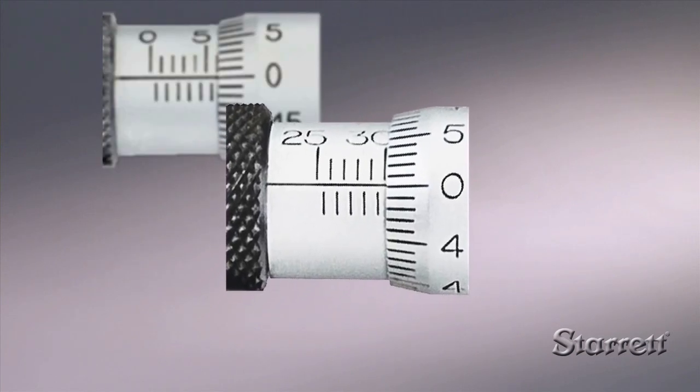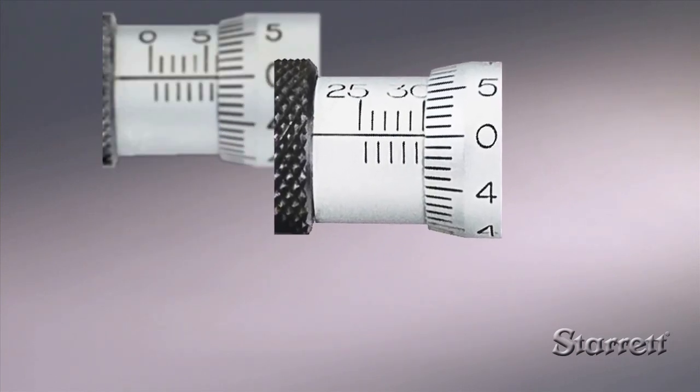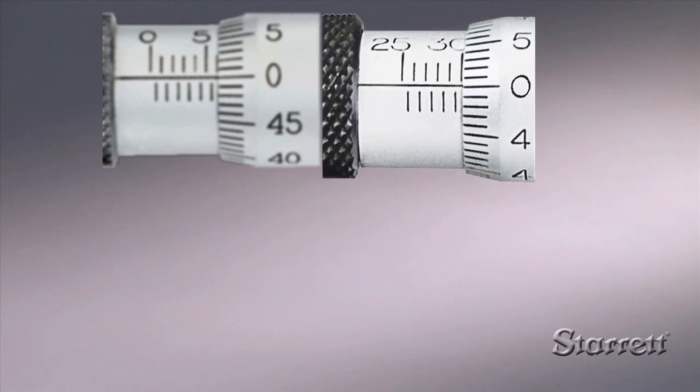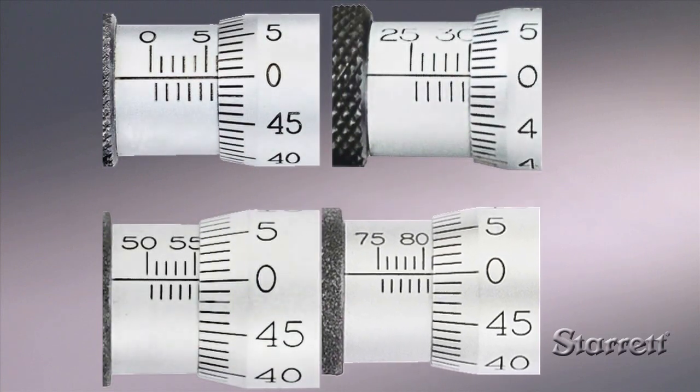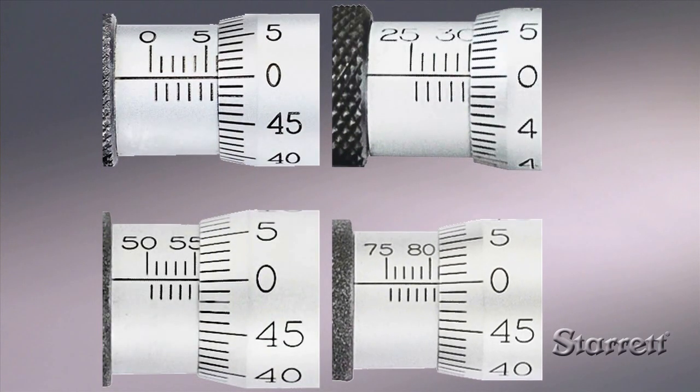For instance, the scale of a 225 to 250 mm micrometer would begin with 25, a 150 to 175 mm tool with 50, and a 175 to 200 mm tool with 75. The lower number of the tool's range plus the thimble and sleeve reading is your measurement.